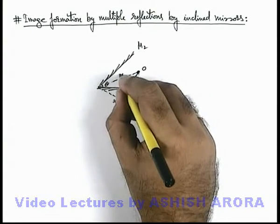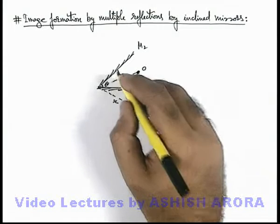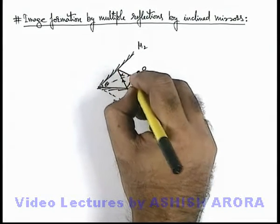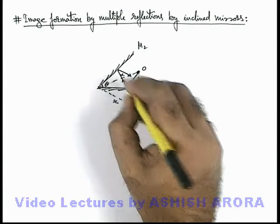When this light ray will incident on mirror M2, this image I1 will act as an object for this mirror M2, and the light ray is reflected in such a manner that this image I1 will be acting as an object.